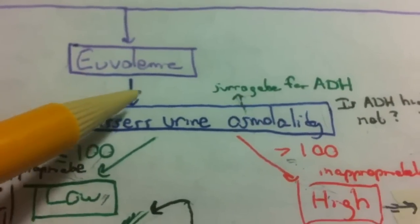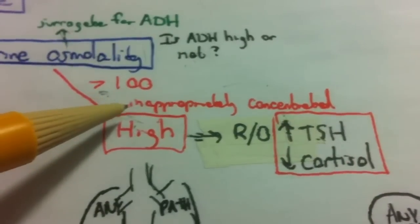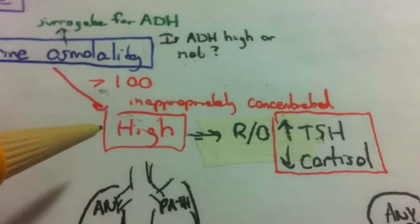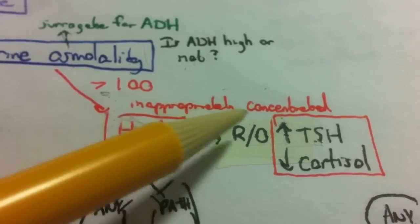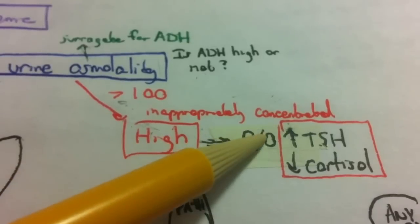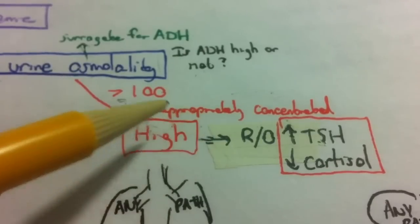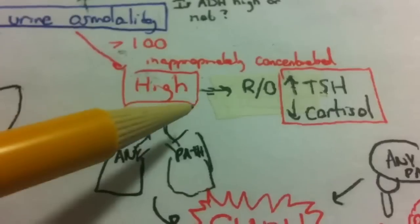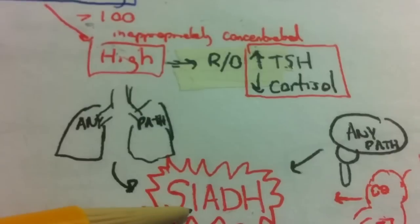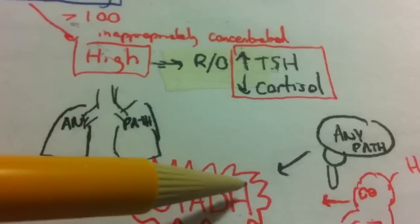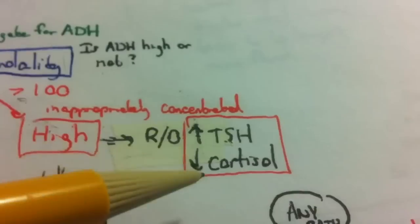Usually when someone is euvolemic, we assess urine osmolality and find it's greater than 100, meaning ADH is high. This means we're producing an inappropriately concentrated urine — if we're hypoosmolar and hyponatremic, we should be producing dilute urine to bring osmolality and sodium back up. This is inappropriately concentrated. We can't call it SIADH — Syndrome of Inappropriate Antidiuretic Hormone — until we rule out hypothyroidism and hypocortisolism.